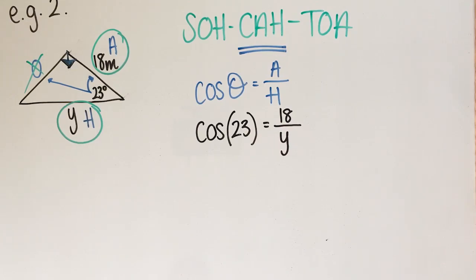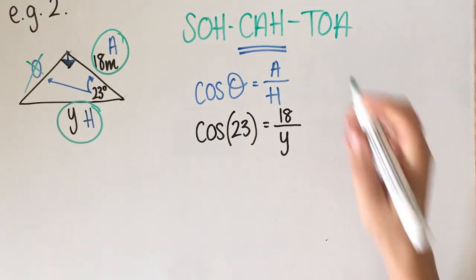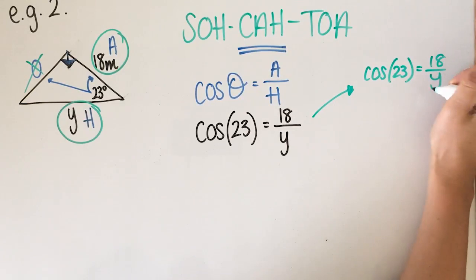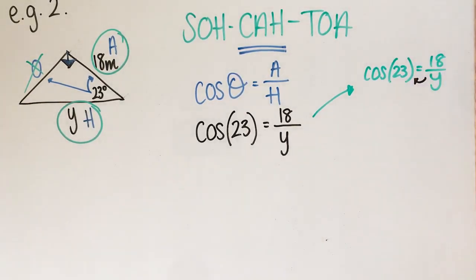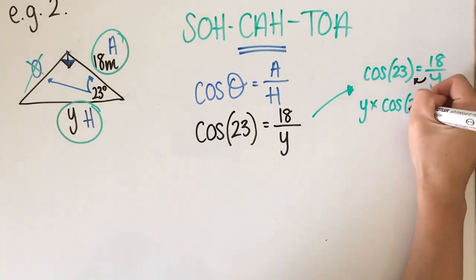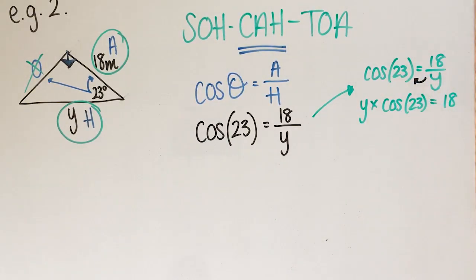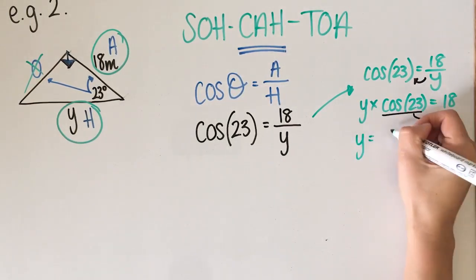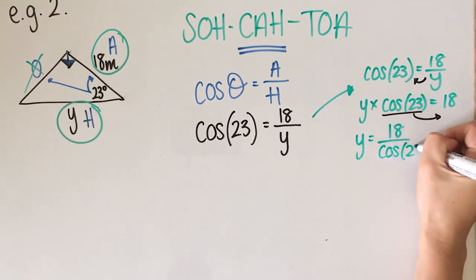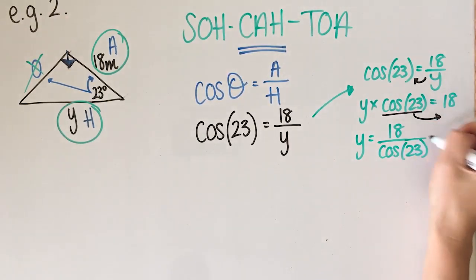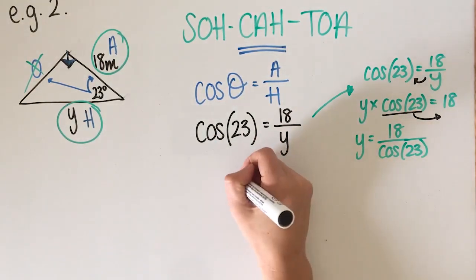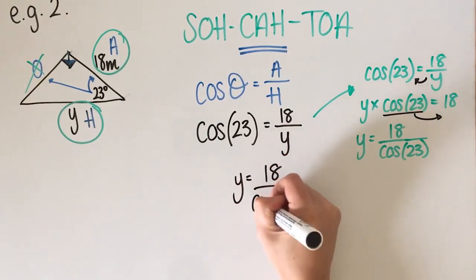Now I need to get Y on its own. I multiply both sides first, but Y is still not on its own, so I need to divide. I end up with Y equals 18 over cos of 23. If that's confusing, what I always think is: if the pronumeral is on the bottom, we swap the ratio and the pronumeral around. So Y equals 18 over cos of 23.